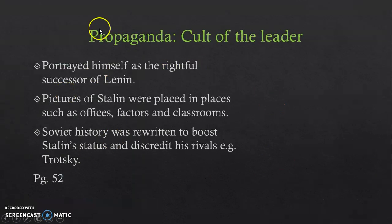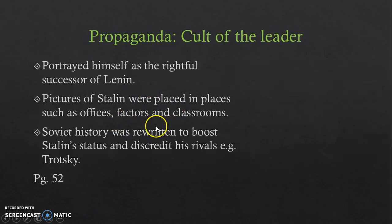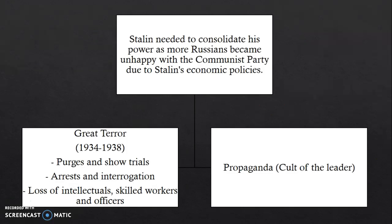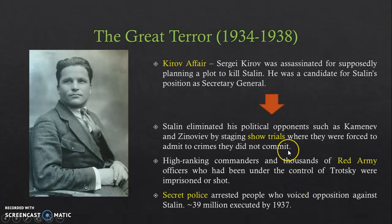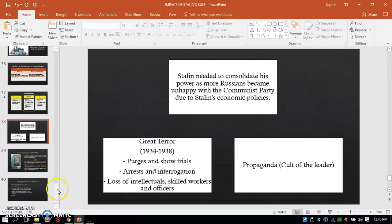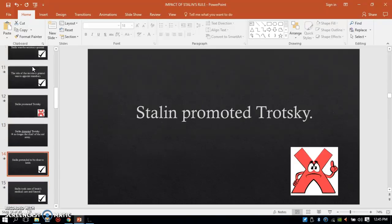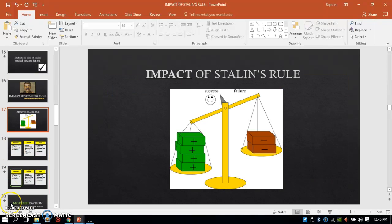Besides the purges, Stalin also had to portray himself as a powerful person. He used propaganda — portraying himself as the rightful successor of Lenin, putting up pictures of himself in offices, factories, and classrooms, and rewriting Soviet history to boost his status and discredit his rivals. All these things made him appear trustworthy and the rightful leader of the Soviet Union. The political impact of Stalin's rule really benefited Stalin by allowing him to consolidate his power, but was not beneficial to political opponents who suffered greatly. Always bear in mind that you have to think about impact in terms of binaries.